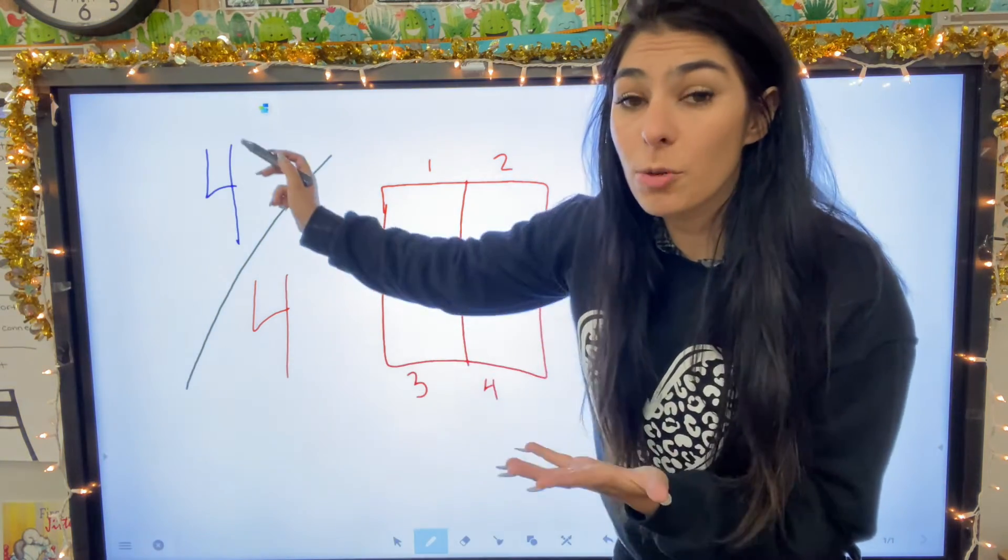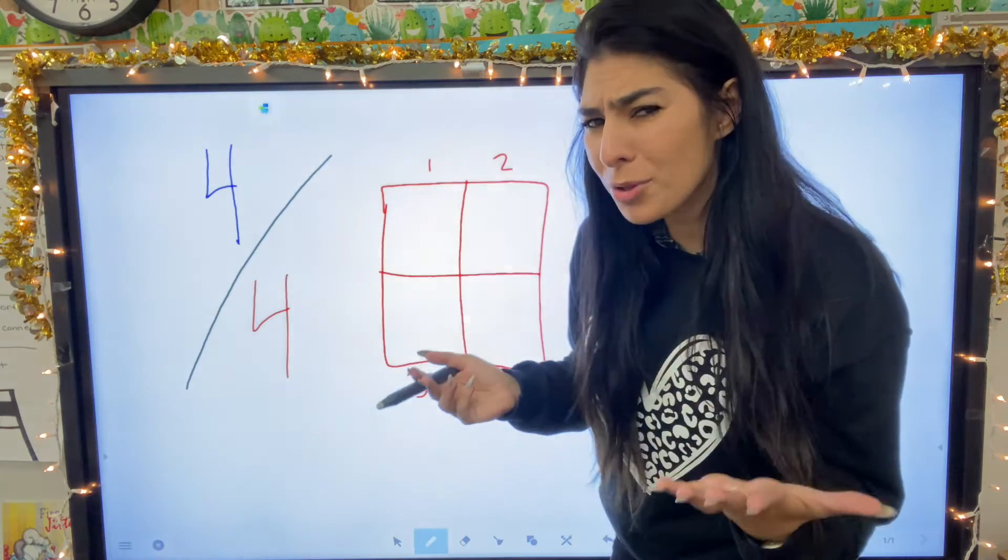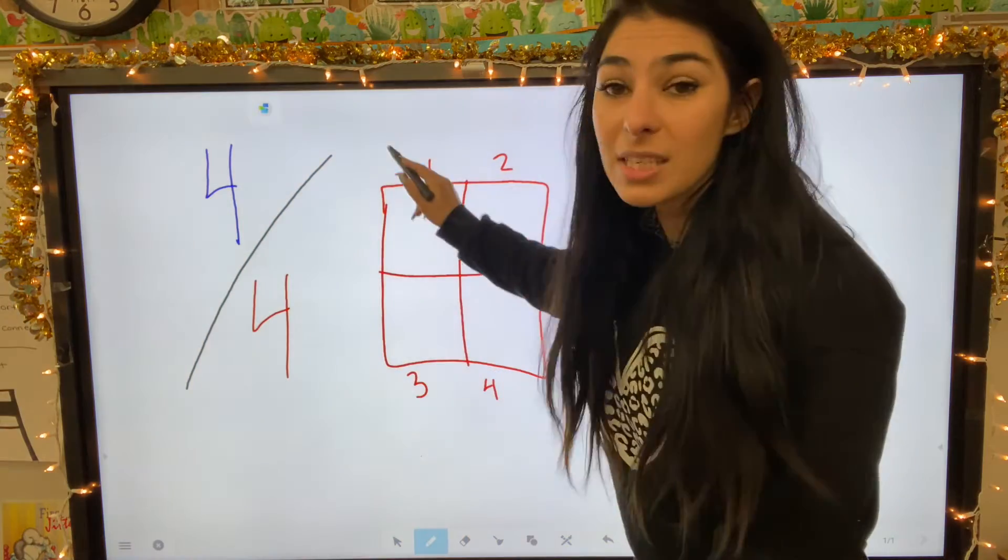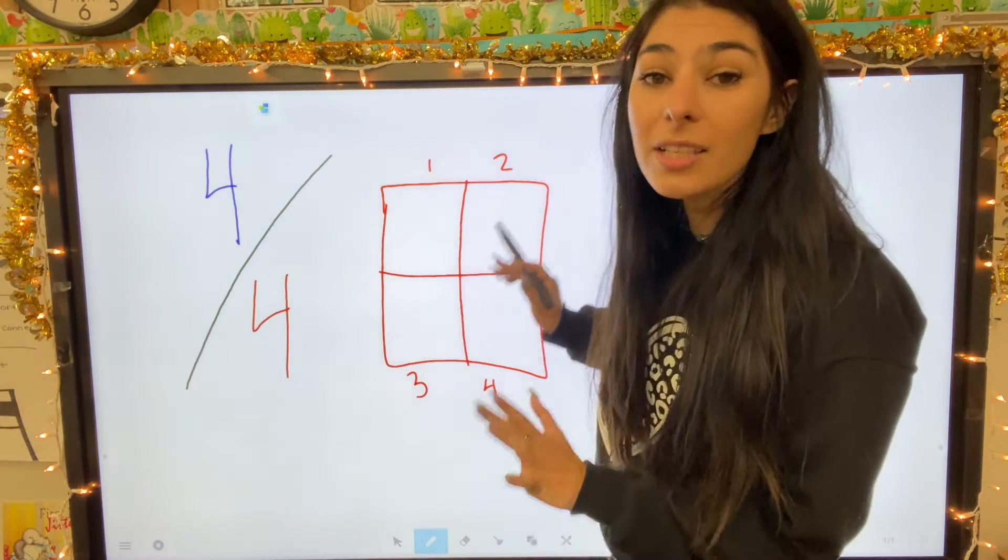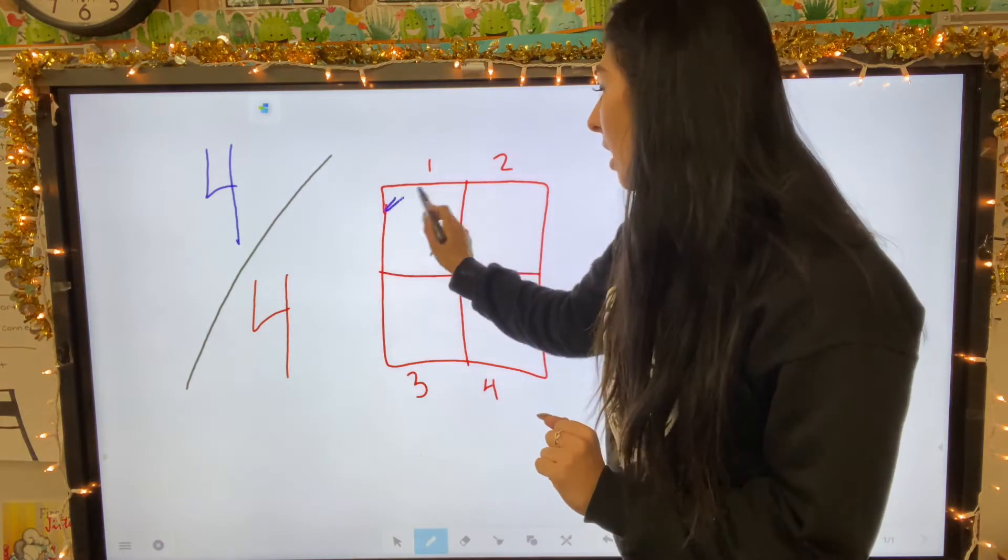But now I'm going to go to my numerator and my numerator is also four. So this is one object cut into four pieces. Four of them are colored.